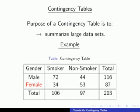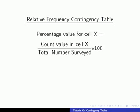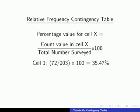It's always a good idea to make the data as simple as possible, so that when you look at it, you can tell straight away what's going on. A good way of doing this is to rewrite your frequency table, but instead of having counts in each cell, we generate the corresponding percentage values. The table this gives is called a relative frequency contingency table. To get the percentage value of a particular cell, we divide the count value for that cell by the total number of students surveyed and multiply by 100. So for our first cell, we divide 72 by 203 and get 35.47%.